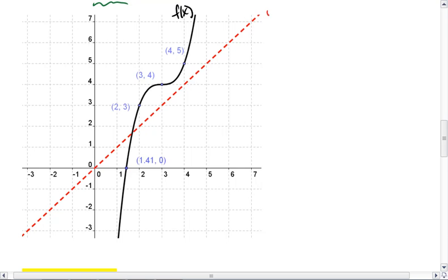And the red dotted line is the y equals x line. Well, we already know from what we saw earlier that we take all the ordered pairs of our original function and we flip the x and y value.